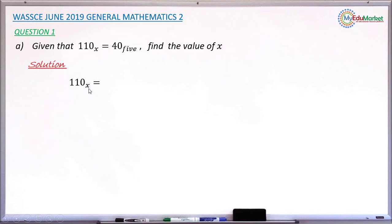In this case, it's x. So I'm going to have 1 multiplied by x raised to the power of 2, plus the next digit which is 1, multiplied by x raised to the power of 1, plus the next digit which is 0, multiplied by x raised to the power of 0. Now simplify this.